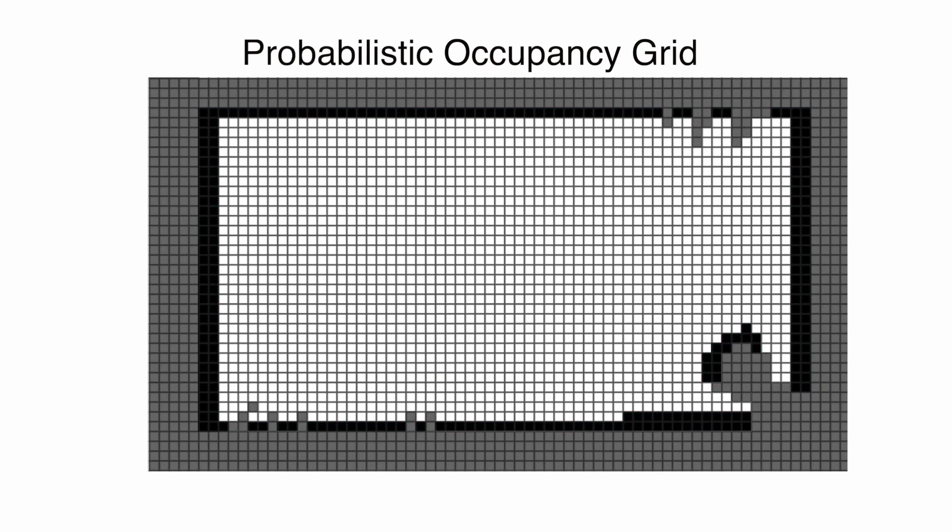Now there's also probabilistic occupancy grids, where the cell doesn't have to be fully occupied or not, and instead there's a probability that it's occupied between 0 and 1. With this model, you have full confidence in black and white cells, and everywhere else is some shade of gray depending on your uncertainty.